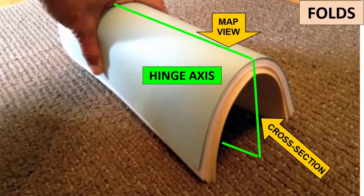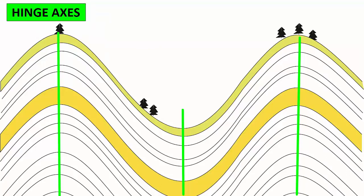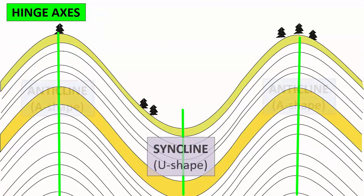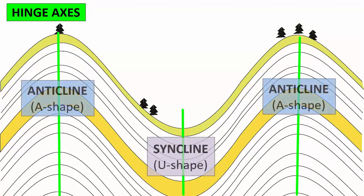If the fold has a hinge axis, you can classify it by looking at its cross-section that cuts perpendicularly through the hinge axis. When you look from the side, synclines have a U shape in cross-section. Anticlines are the opposite — an upside-down U or an A shape. If the axial plane is vertical, then the fold is simple and upright.